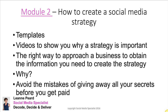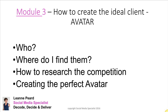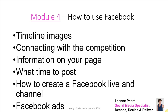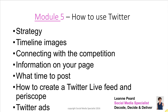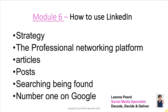Module two looks at how to create a social media strategy — a pretty intense module with templates, videos on why strategy is important, the right way to approach your business owner, creating the strategy, identifying the 'why' for the business owner, and how to avoid mistakes like giving away all your secrets before you get paid. Module three is how to create an ideal avatar — the 'who', where to find them, how to research competition, and how to create the perfect avatar to attract clients. Module four covers how to use Facebook — timeline images, sizes, connecting with competition, filling in page information, when to post, how to create a Facebook Live, Facebook ads, and building a YouTube channel. Module five is how to use Twitter — strategy, timeline images, connecting with competitors, getting followers, page information, time to post, Twitter live feed and Periscope, Twitter ads and Twitter cards. And how to use LinkedIn.